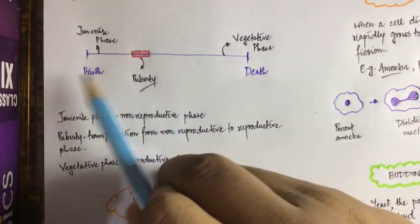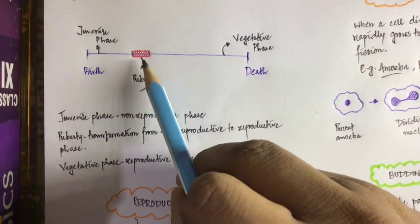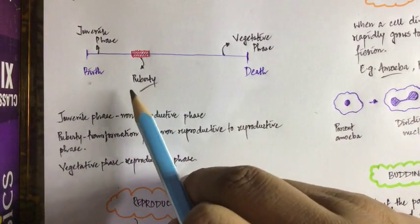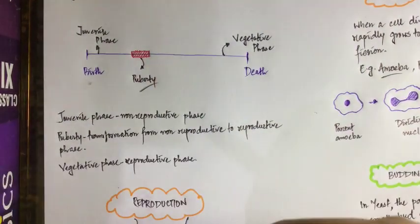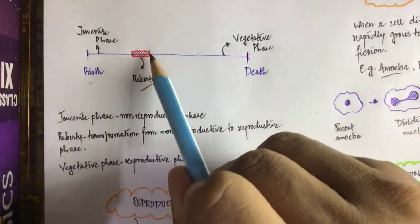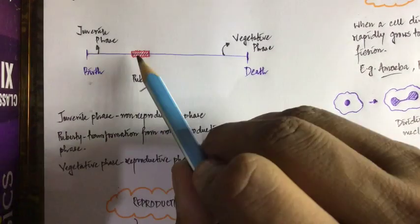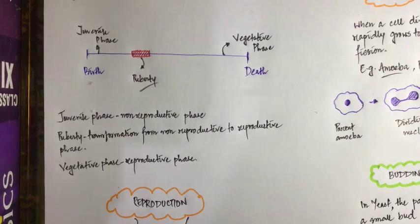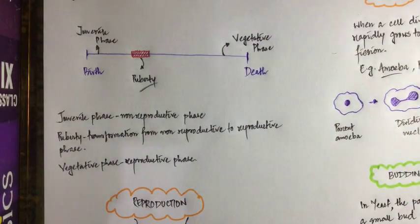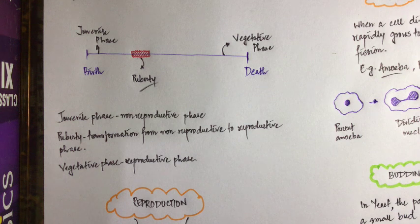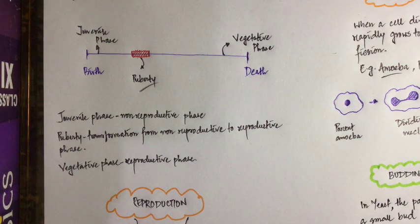Within the whole lifespan of an organism, there is a small portion of time when the organism becomes reproductively active. This point in time when the organism becomes reproductively active is called puberty. Any lifespan before puberty, starting from birth till puberty, is called the juvenile phase.